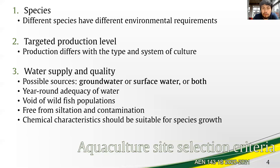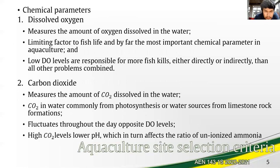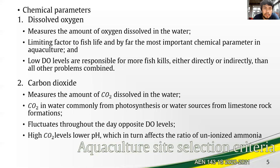The other parameters need mention as well, because these are all involved in an interplay in the natural environment. Dissolved oxygen is the measure of the amount of oxygen dissolved in the water, and it is the single main limiting factor to fish survival or life — the most important technical parameter in aquaculture. Low DO levels are responsible for more fish kills, either directly or indirectly, than all other problems of an aquaculture system combined.